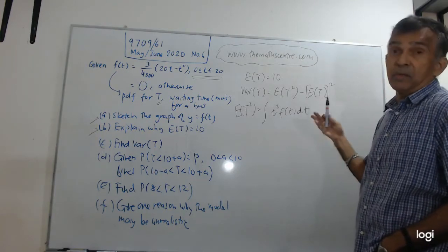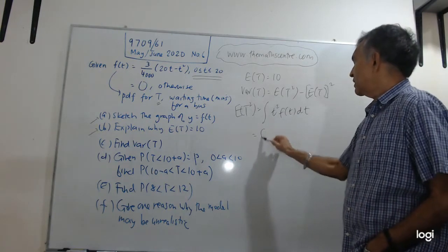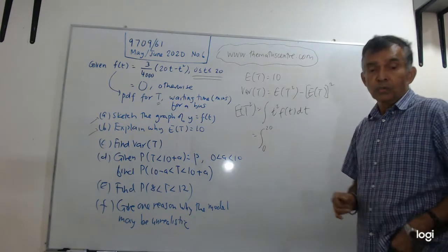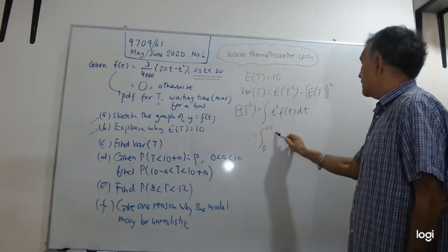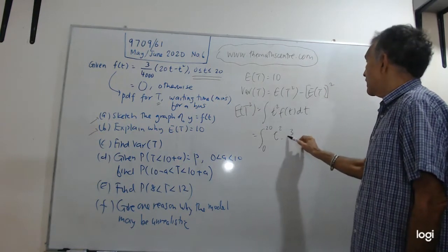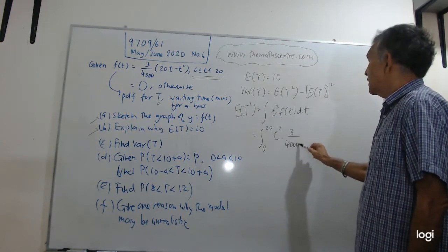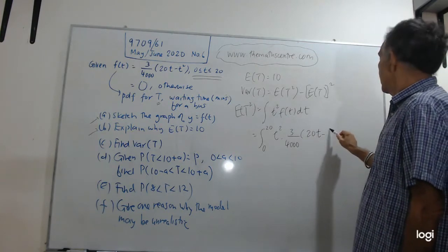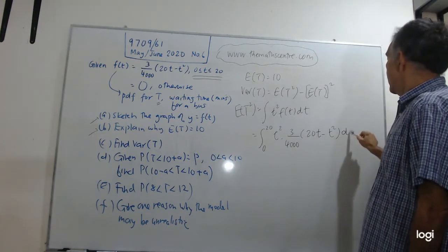So the only thing now is for me to plug in what is f(t) and what are the limits. The limits, remember, is going from zero to 20, and T squared, what is f(t)? Let me write it down: three over four thousand, 20t minus t squared, and dt.